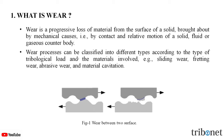Wear processes can be classified into different types according to the type of tribological load and the materials involved. Examples include sliding wear, fretting wear, abrasive wear, and cavitation, etc.